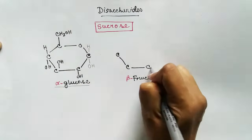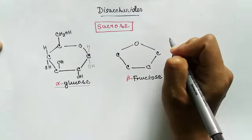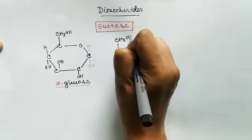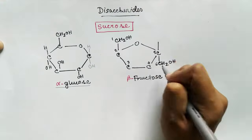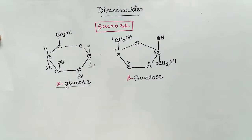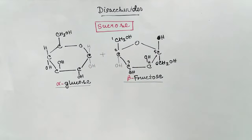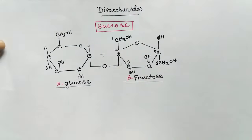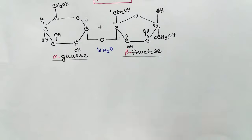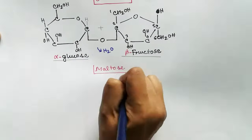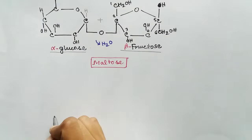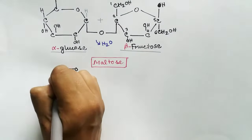As this is alpha glucose, the OH group on the first carbon is in the trans position with the CH2OH of the sixth carbon. As this is beta fructose, the anomeric carbon will have the OH group in the cis position with the CH2OH of the sixth carbon. The glycosidic bond will form between the anomeric carbons of alpha glucose and beta fructose in the case of sucrose, and one molecule of water will be released.